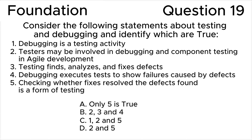Consider the following statements about testing and debugging and identify which are true. 1. Debugging is a testing activity. 2. Testers may be involved in debugging and component testing in Agile development. 3. Testing finds, analyzes, and fixes defects. 4. Debugging executes tests to show failures caused by defects. 5. Checking whether the fixes resolved the defects found is a form of testing.